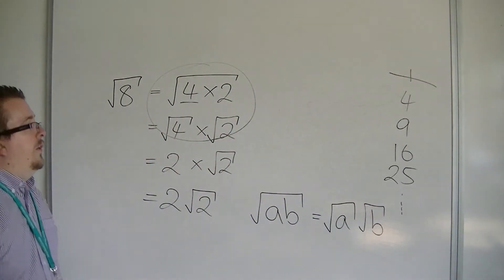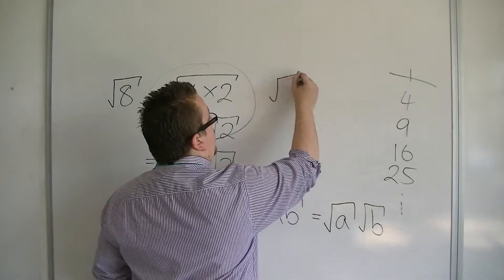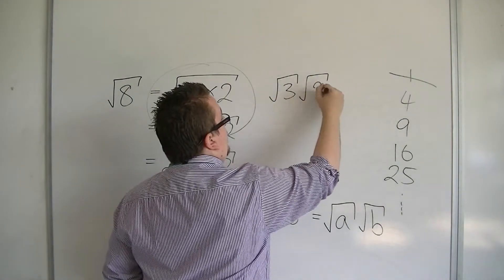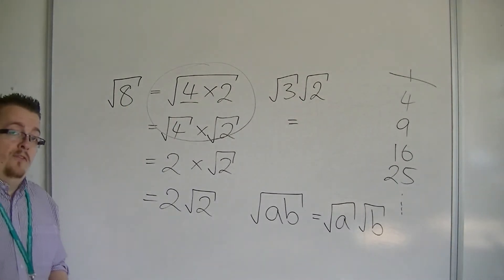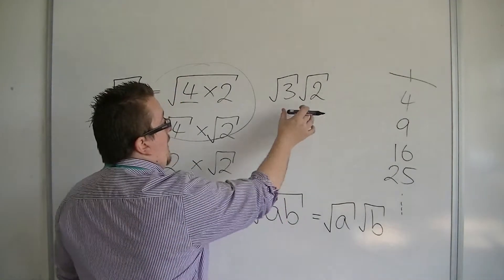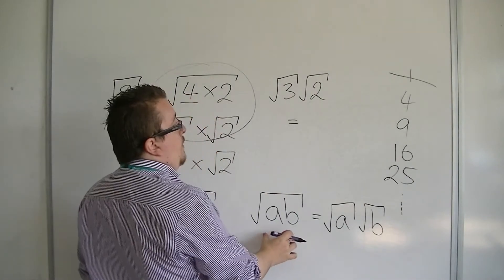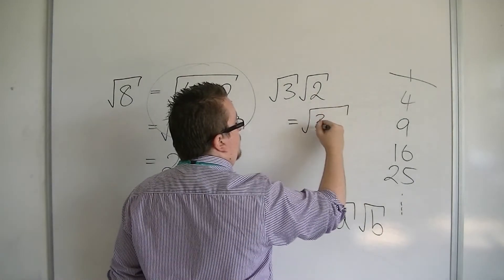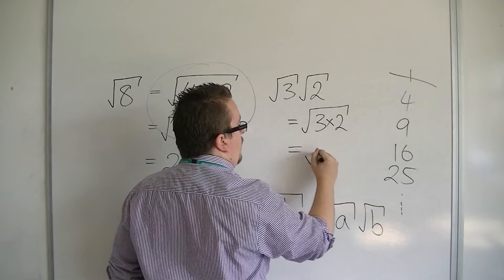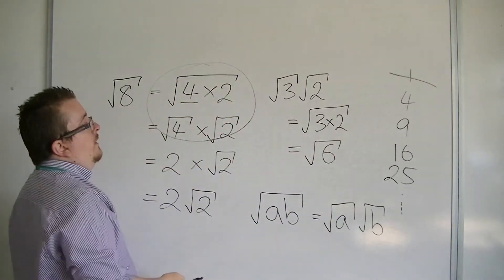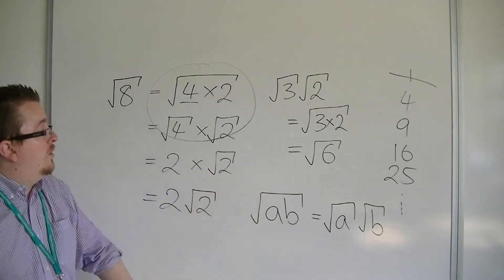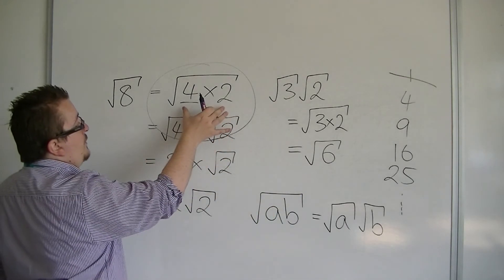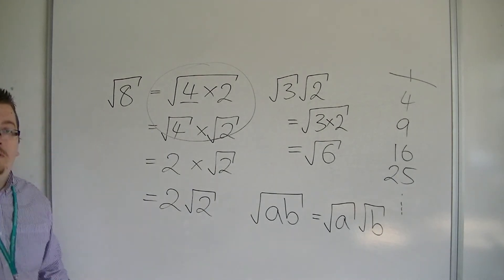So, if I had, for example, the square root of 3 times the square root of 2, then I could simplify that for myself and say that's the same as the square root of 3 times 2, which is the square root of 6. So, the square root of 3 times the square root of 2 is just the square root of 6. So, we can use it backwards, or we could use it in the other direction forwards. And that is how we can simplify the surd.